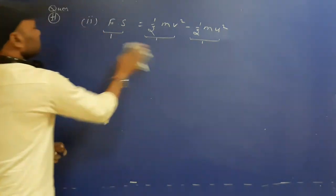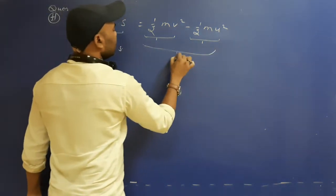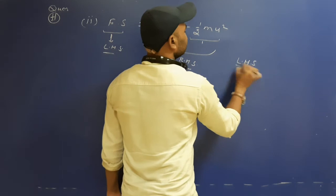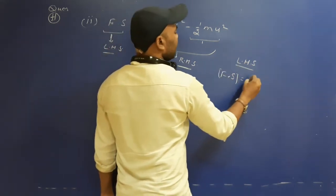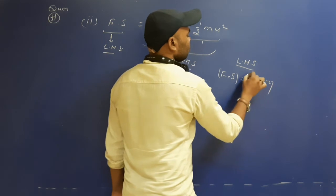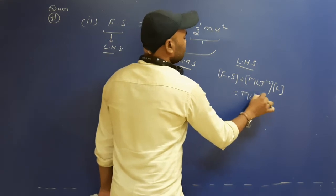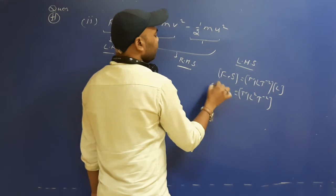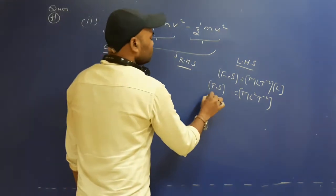Now check: F into S will be the LHS and the whole right-hand term will be the RHS. In the LHS, F into S — the dimensional formula of F is MLT⁻², multiplied by L, giving ML²T⁻². So the dimensional formula of F into S is ML²T⁻².